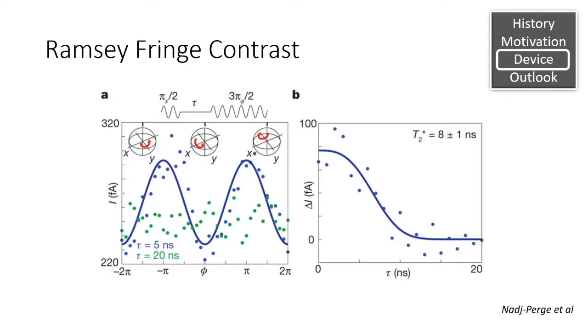The group then measured Ramsey-Fringe contrasts to determine the decoherence times. Now we haven't talked about Ramsey-Fringe contrasts before, but they're very similar to the idea of Rabi oscillations. Here they measure the difference between the peak and the trough to determine the contrast. As you can see, at 5 nanoseconds these are very pronounced waves. However, at 20 nanoseconds you can barely see a pattern in the green dots here.